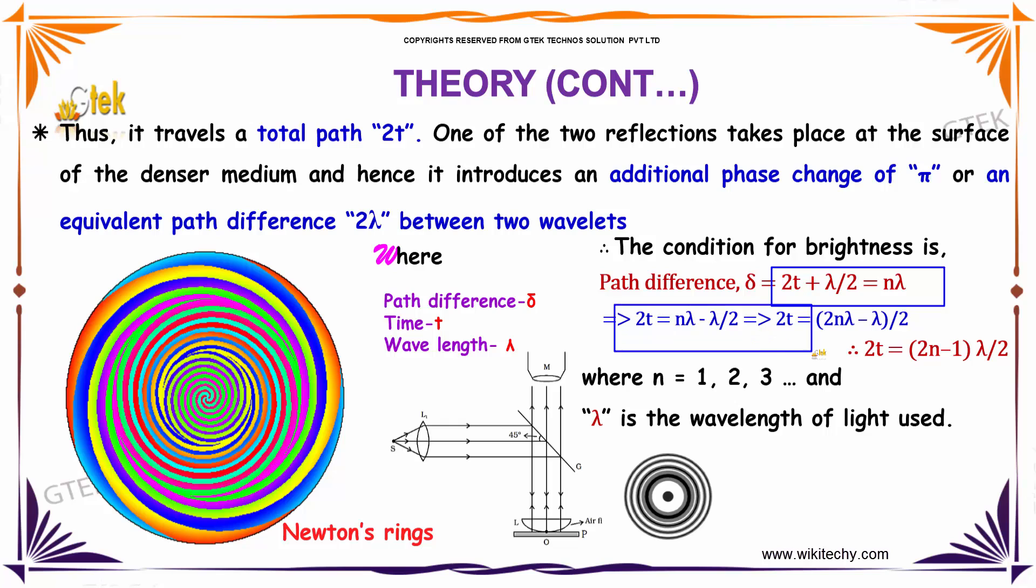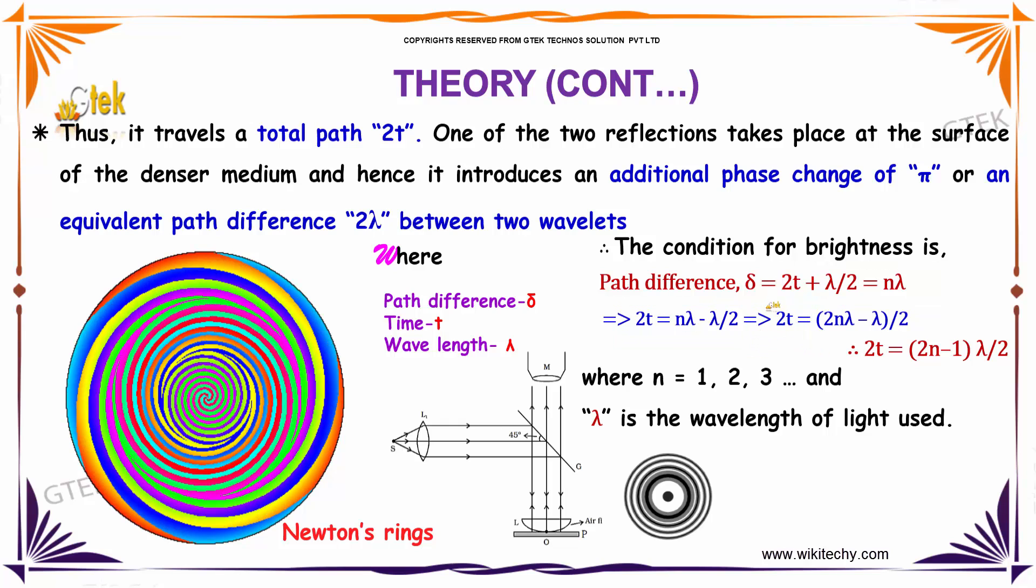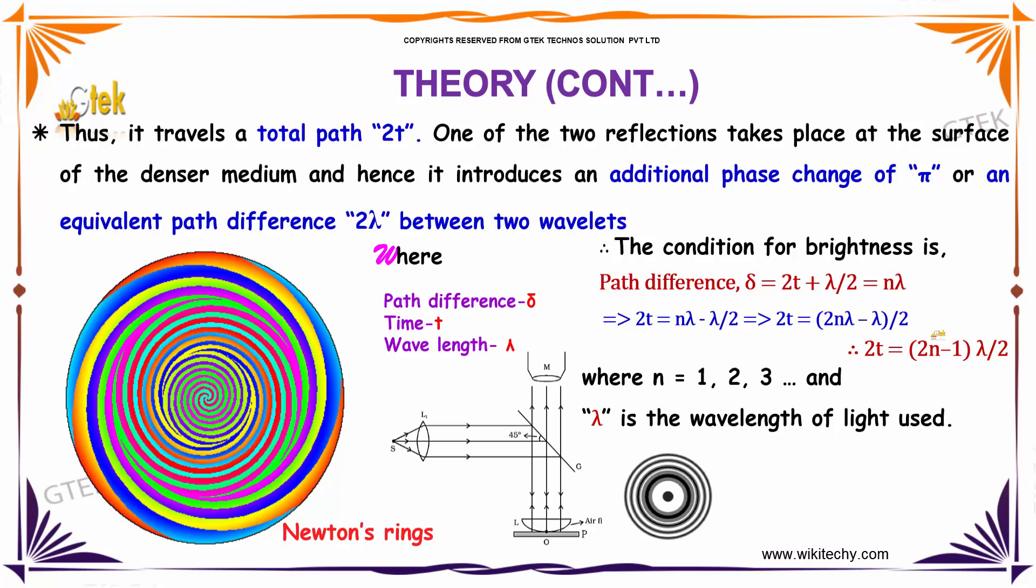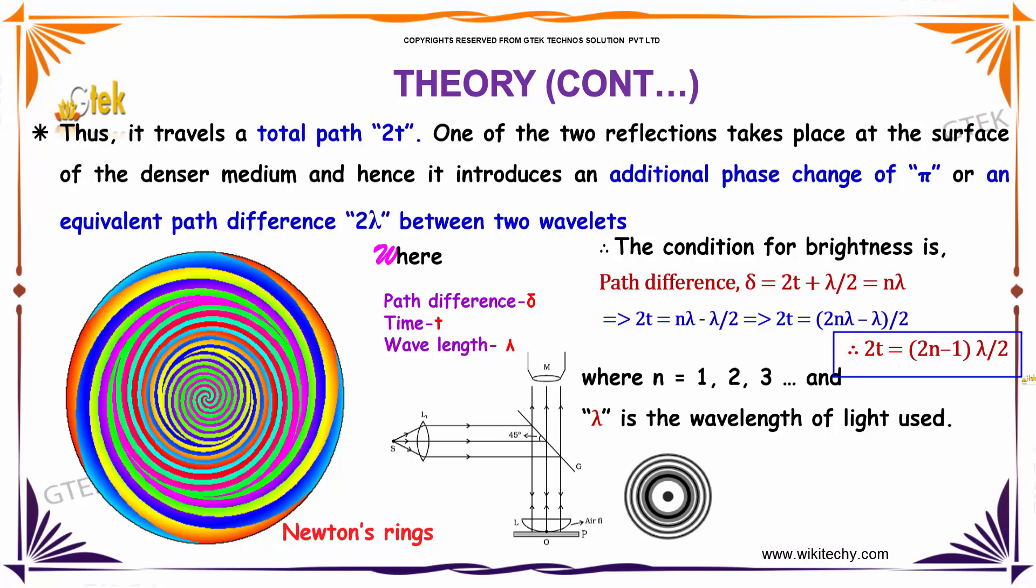Solving it you will be getting 2T = 2nλ - λ/2. So this is the final equation: 2T = (2n-1)λ/2.